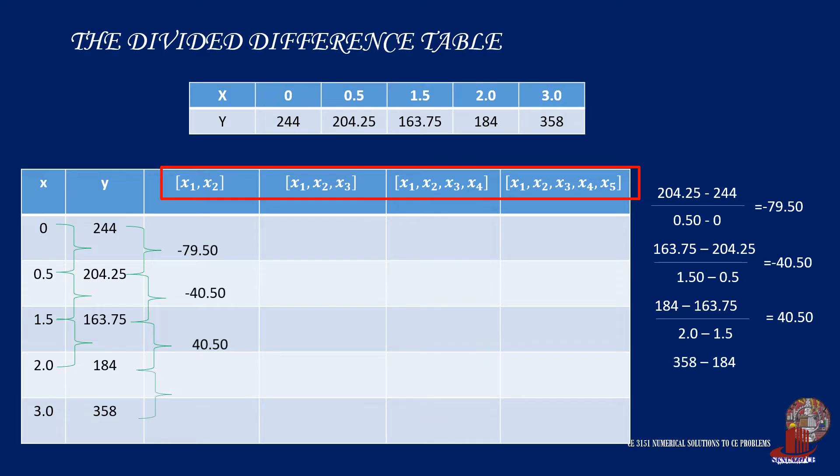Lastly, 184 taken from 358 and everything is upon 3 minus 2 is 174.